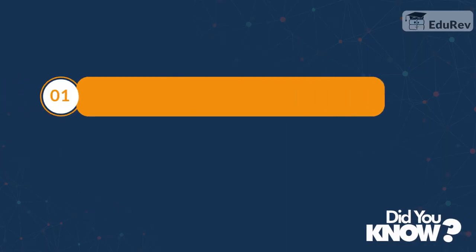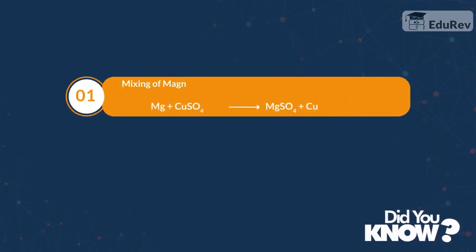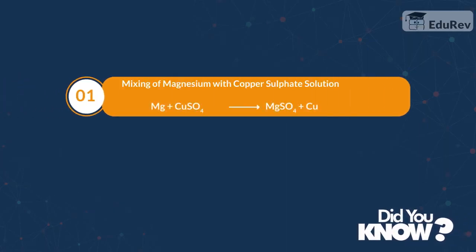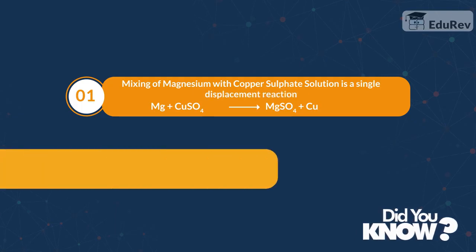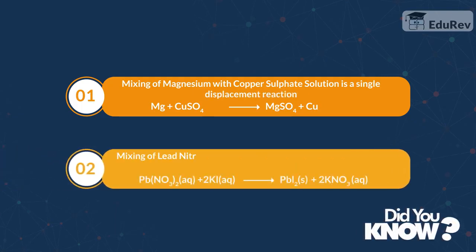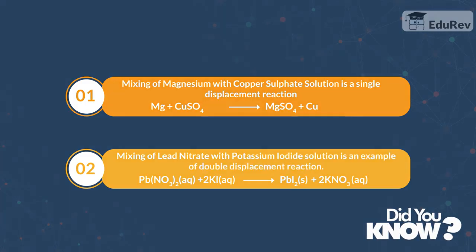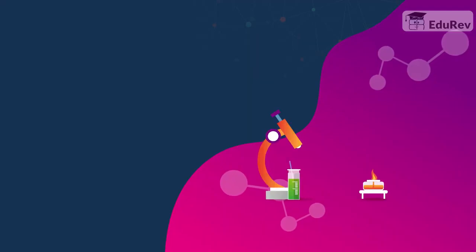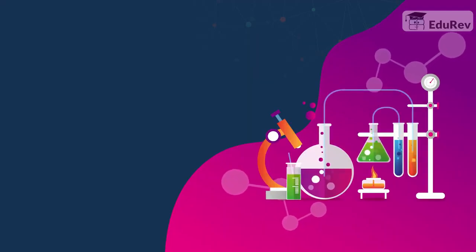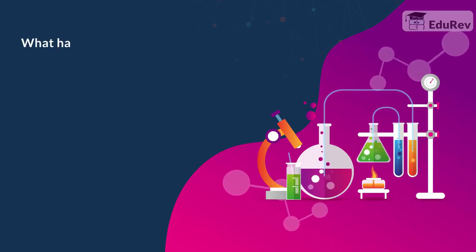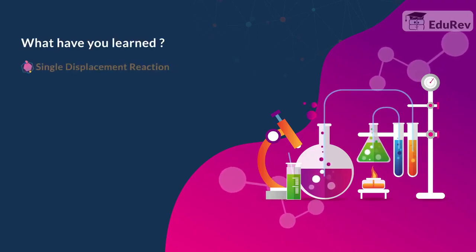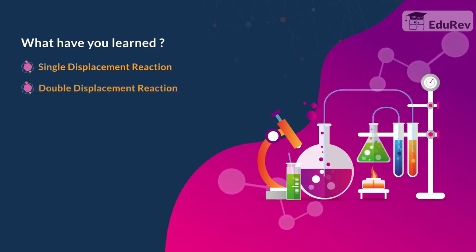Did you know? Mixing of magnesium with copper sulphate solution is a single displacement reaction. Mixing of lead nitrate with potassium iodide solution is an example of a double displacement reaction. Now that we have come to an end of this video, let's quickly summarize your learnings. In this video, we have learnt single displacement reaction and double displacement reaction.